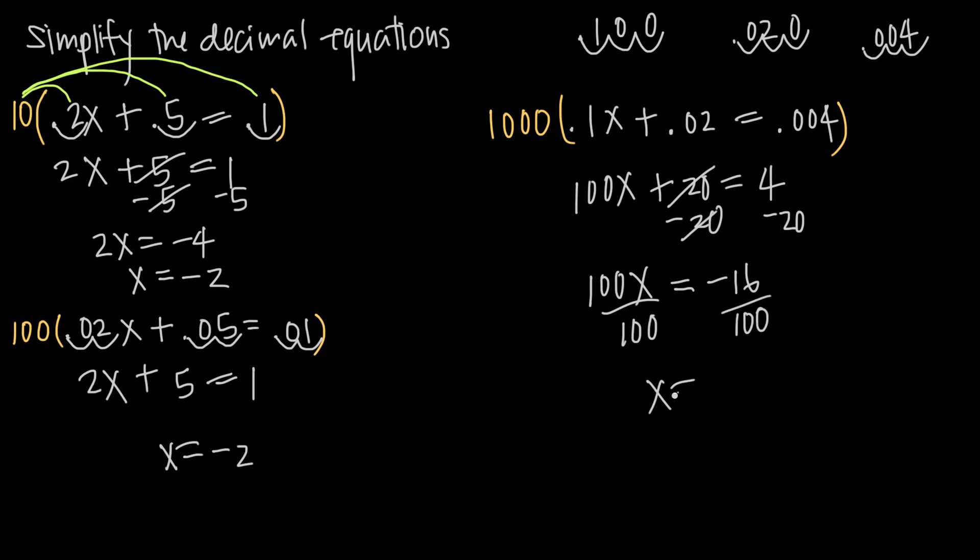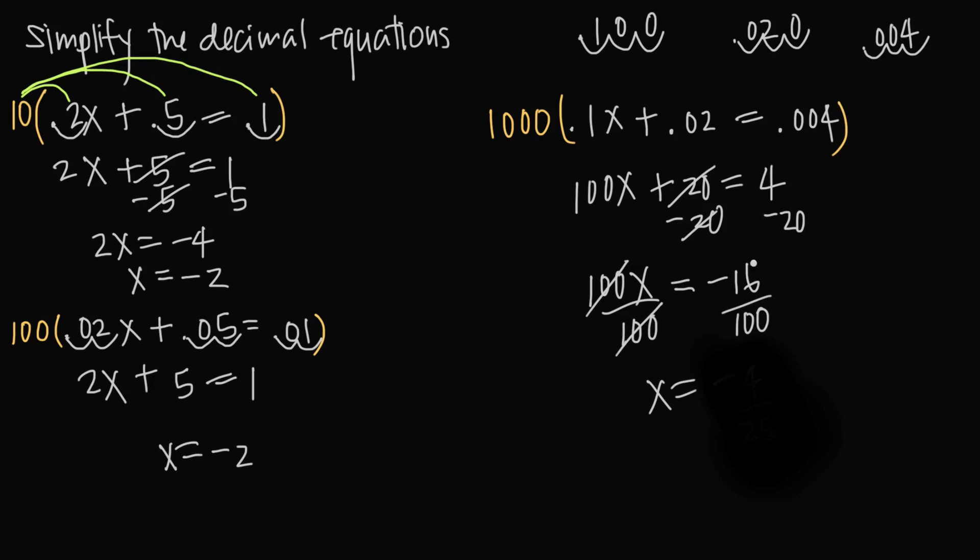Dividing both sides by 100, we get x is equal to, because these 100s cancel, negative 16 over 100, which just becomes negative 0.16, because remember this is the tens place, this is the hundreds place, so 16 over 100 becomes .16.